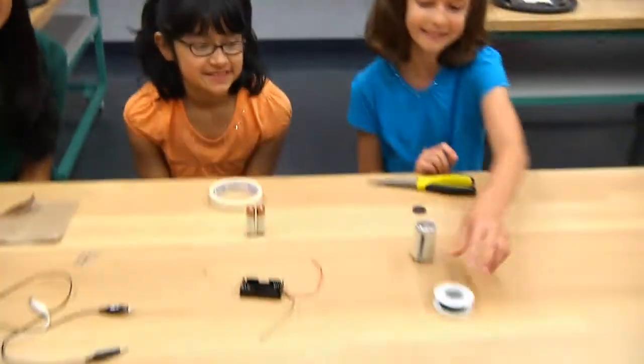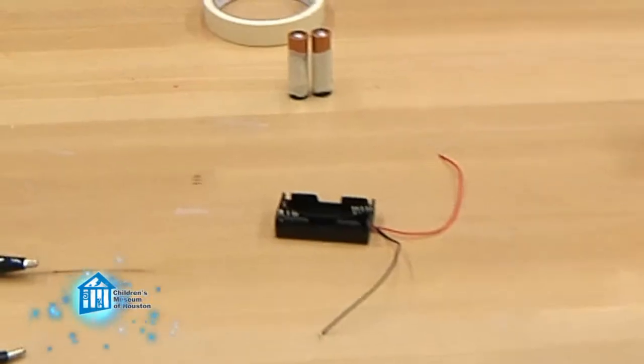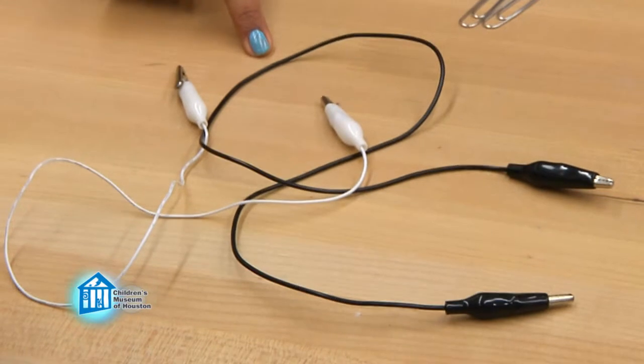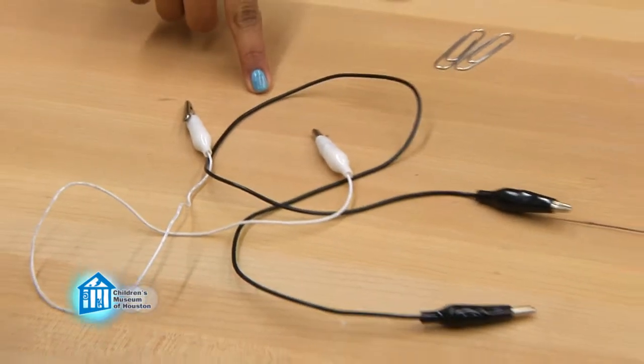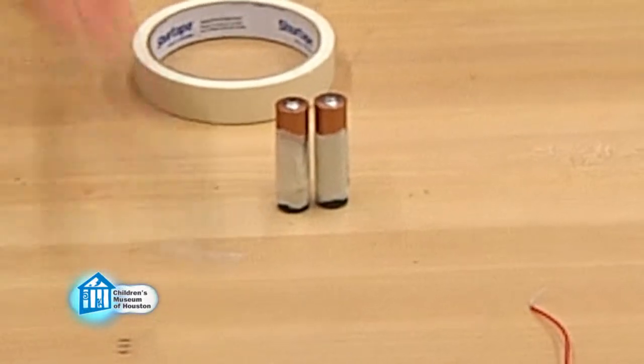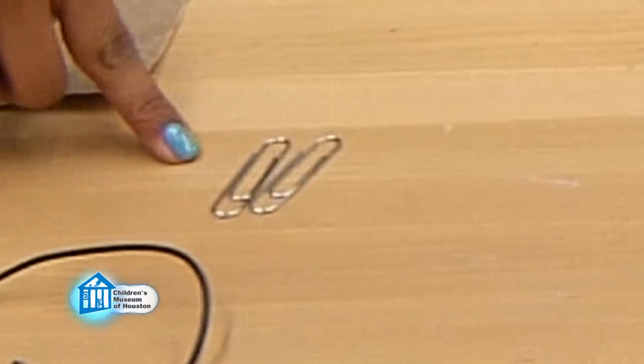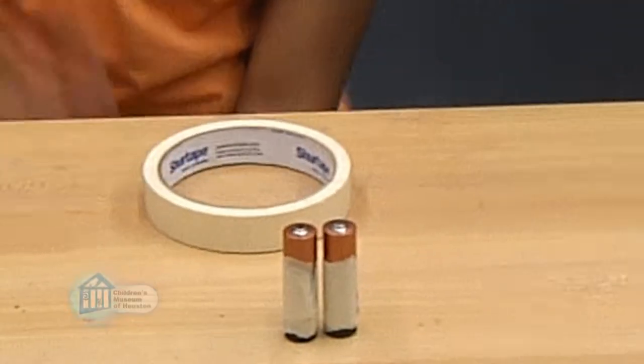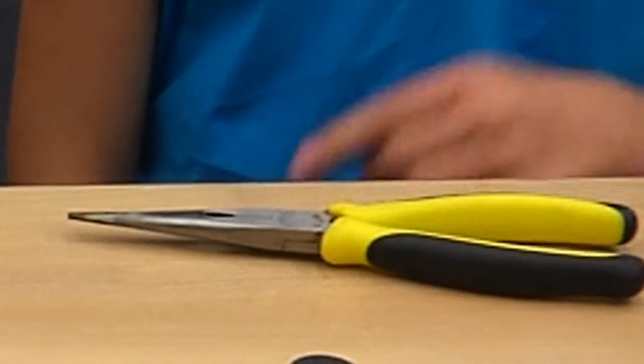You'll need some enameled wire, a 2 AA battery holder, 2 alligator clip wires, all three which are available at your local electronics hobby shop, plus a D-cell battery, 2 AA batteries, 2 large paper clips, a ceramic magnet, some masking tape, a piece of sandpaper, and a pair of needle nose pliers.